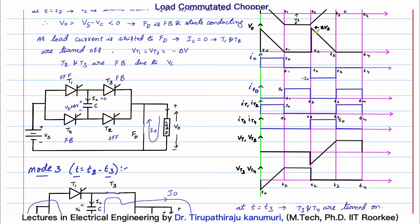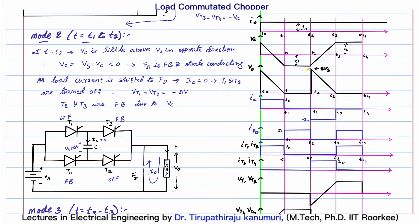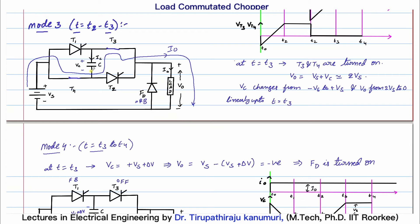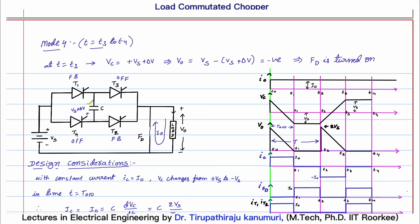The output voltage again decays from 2·Vs as the capacitor discharges from −Vs back toward +Vs. By time T3, the capacitor charges a little above +Vs, making the output voltage negative again. The freewheeling diode turns on again, the capacitor current drops to 0, and T3 and T4 are reverse biased by ΔV and turn off — just as happened to T1 and T2 at time T1. The same process repeats every cycle.